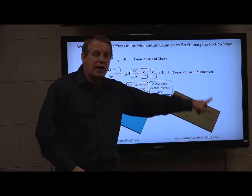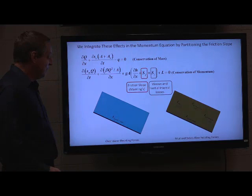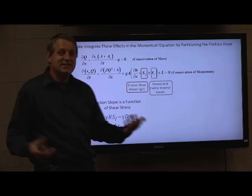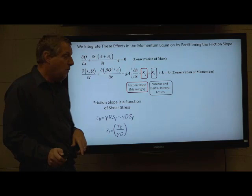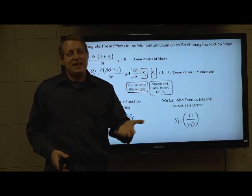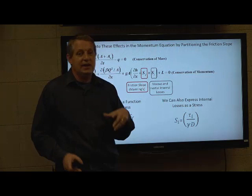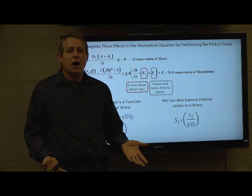How are we going to compute that internal loss slope? The equation for shear stress is γrs, where s is the friction slope. You can solve for the friction slope and cast it in terms of shear stress. Similarly, you can cast the internal loss slope in terms of some internal loss shear stress. That's the really powerful step, because as soon as you define losses in terms of shear stress, we can leverage stress-strain models for different materials. Stress-strain models for different materials are what we call rheological models — models of how a particular kind of material deforms under stress.